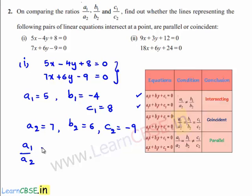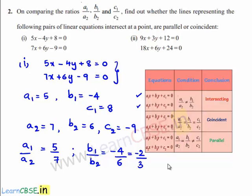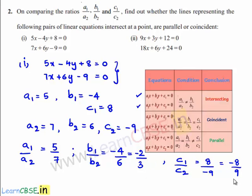So let us find a1 by a2, which is nothing but 5 by 7. And b1 by b2 is equal to minus 4 divided by 6, which is nothing but minus 2 by 3. c1 by c2 is equal to 8 by minus 9, which is nothing but minus 8 by 9.